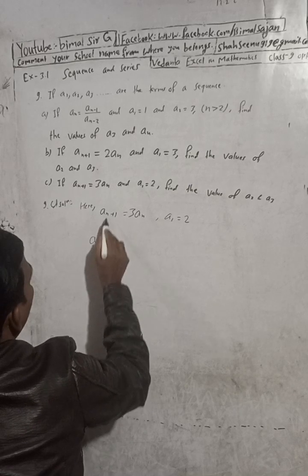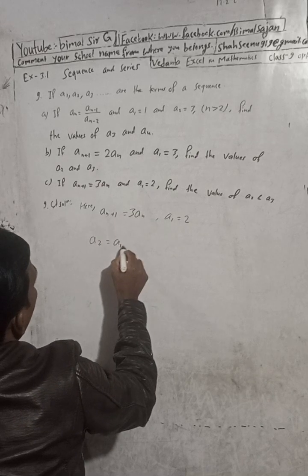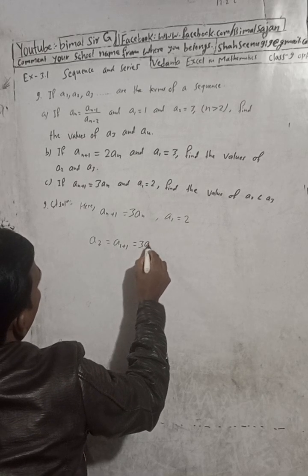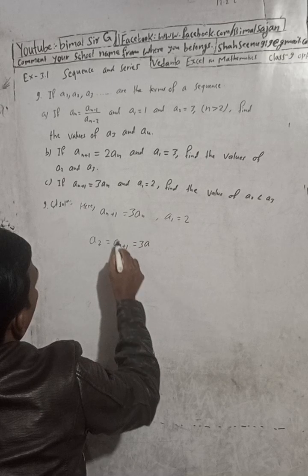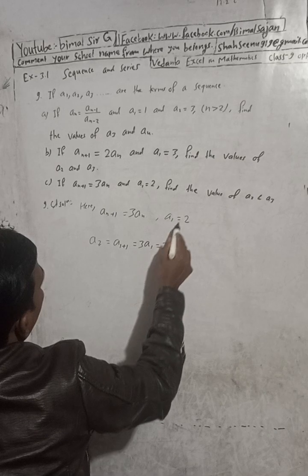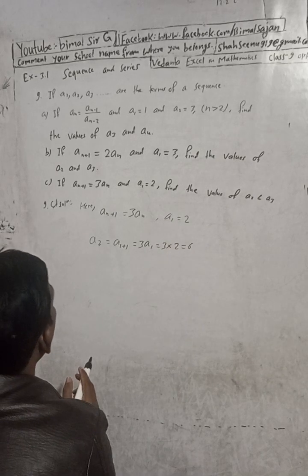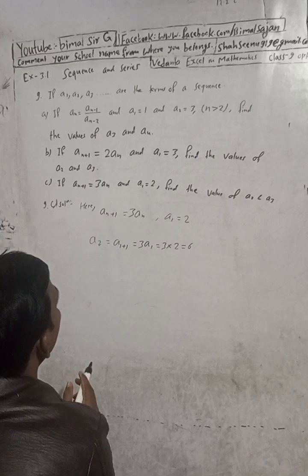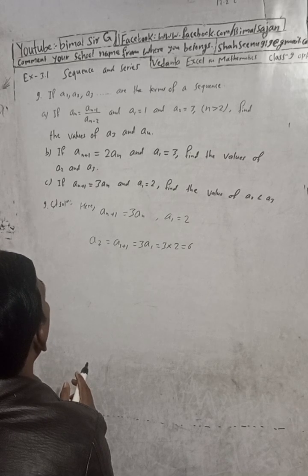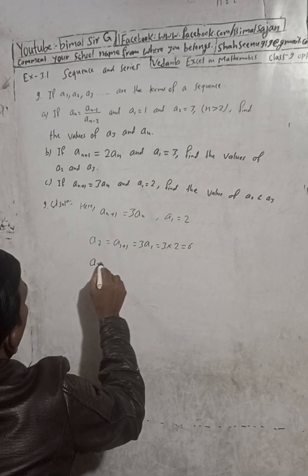To find a2, put n equal to 1. So a_(1+1) equals 3 times a1, meaning a2 equals 3 times a1. a1 is equal to 2, so a2 equals 3 times 2 equals 6.